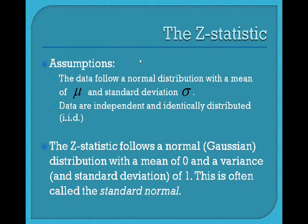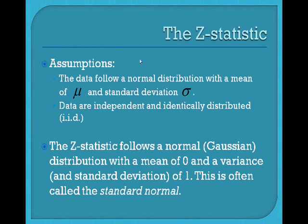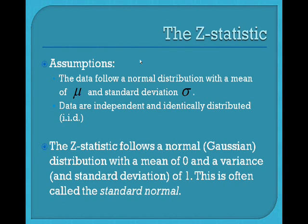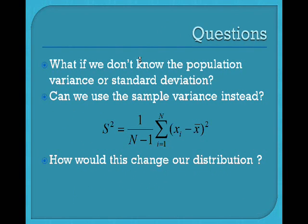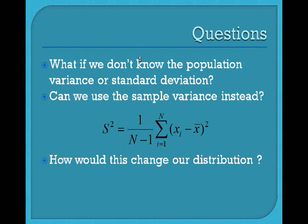In particular, the z-statistic — x-bar minus mu over sigma over square root of capital N, where N is our sample size — we know that it has a mean of 0 and a variance of 1. Of course, since the variance is the square of the standard deviation, the standard deviation is also 1. We'll actually refer to this as the standard normal distribution. That's fine and dandy, but of course, what if we don't actually know the population variance or the population standard deviation?